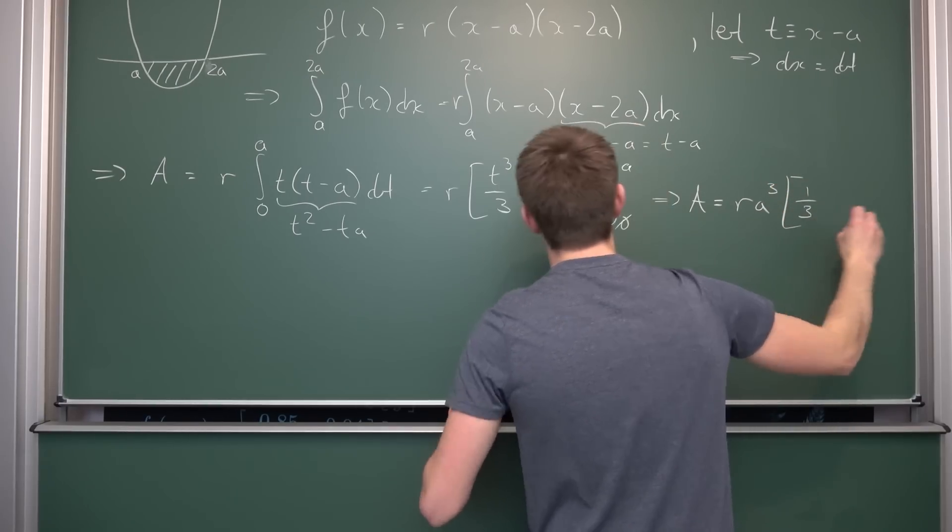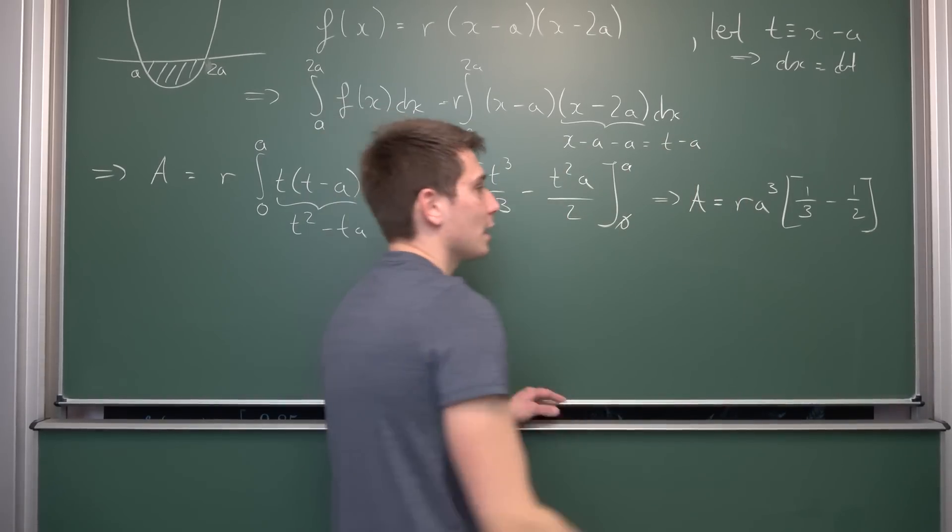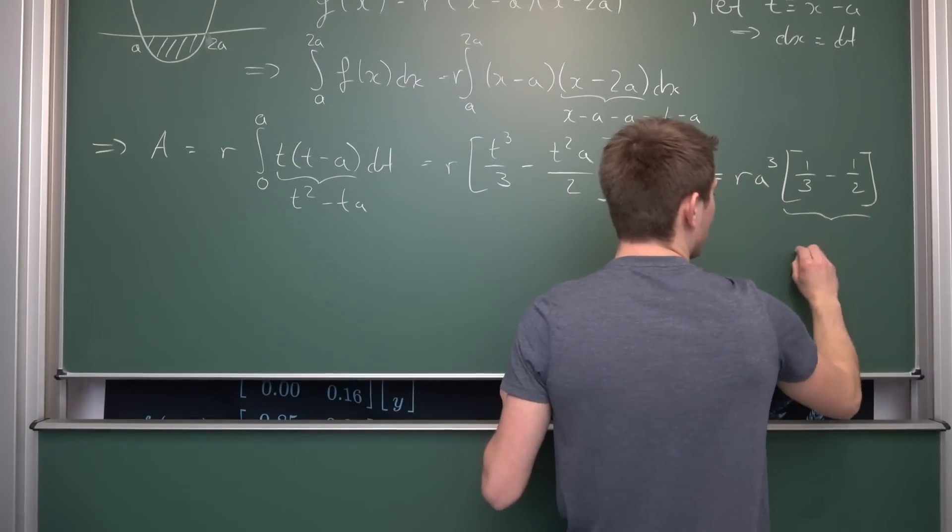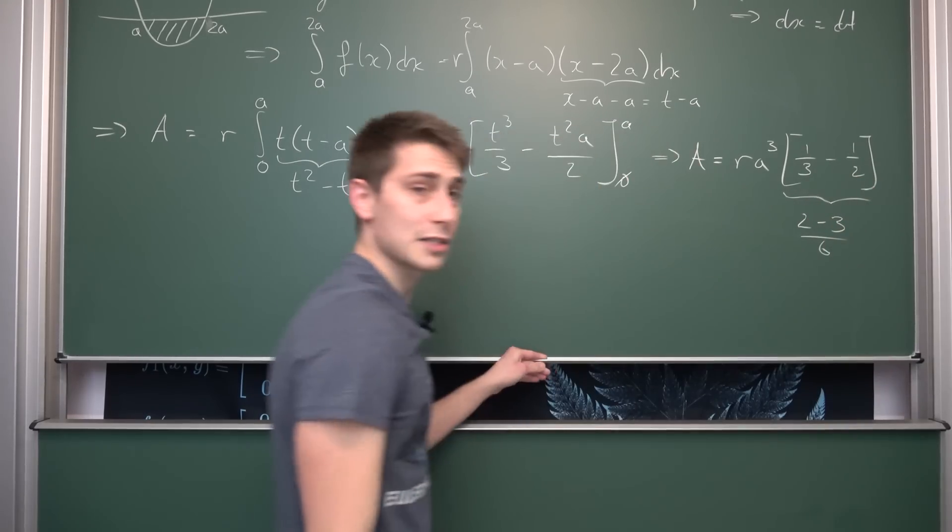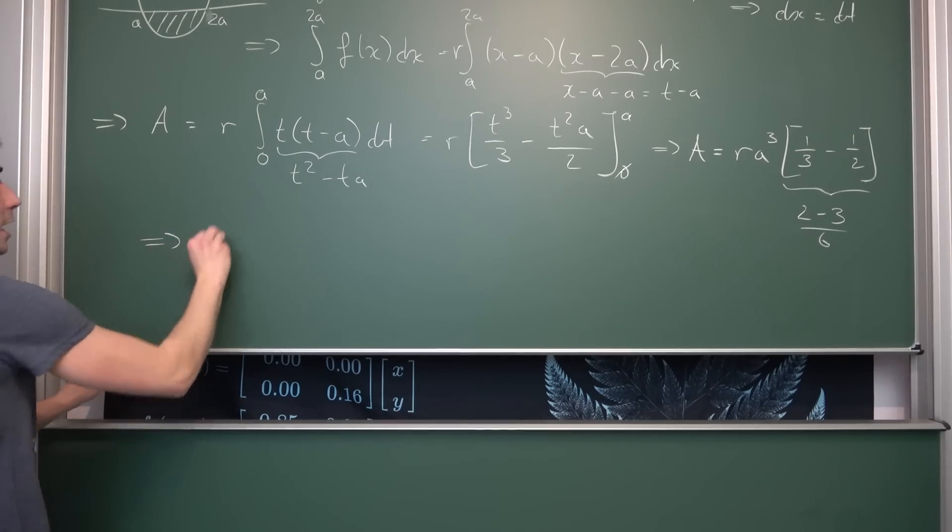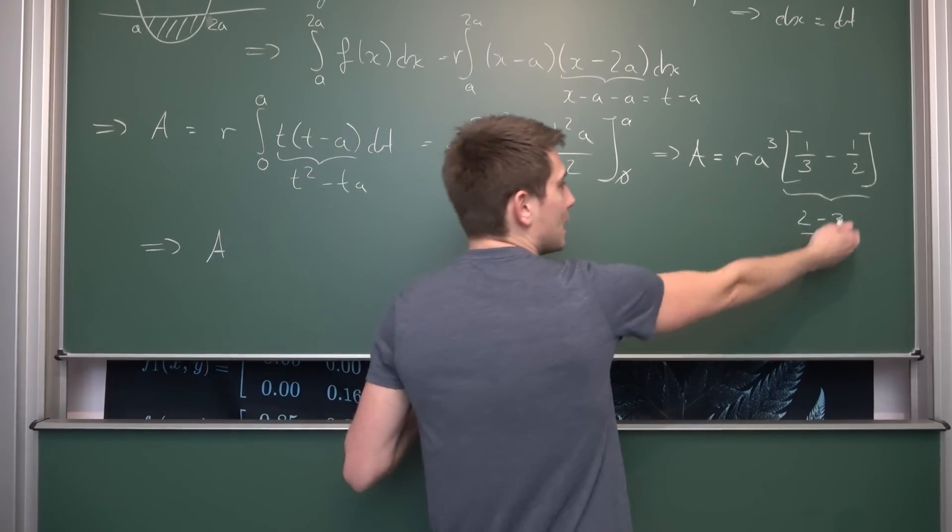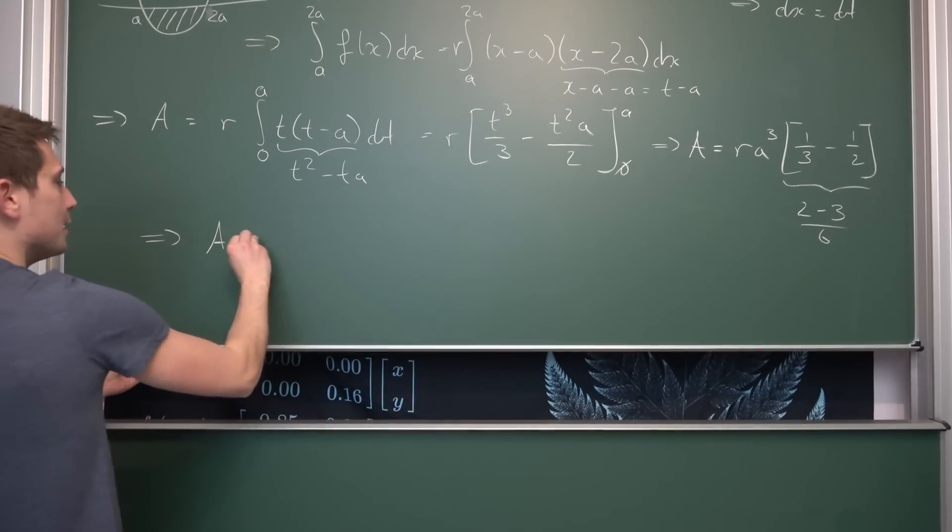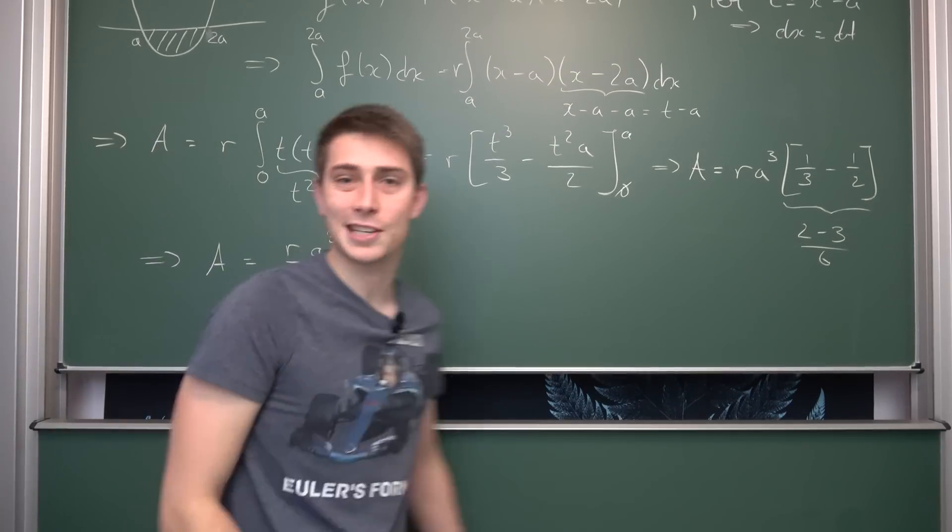Then we have one third minus one half. Those are just simple manipulations. We have a common denominator of six, then we get two minus three, and this turns into negative one sixth, meaning our area, since areas are defined positive, is just the absolute value of what we have here, namely the scaling factor r times a to the third power over six. And that's basically it.